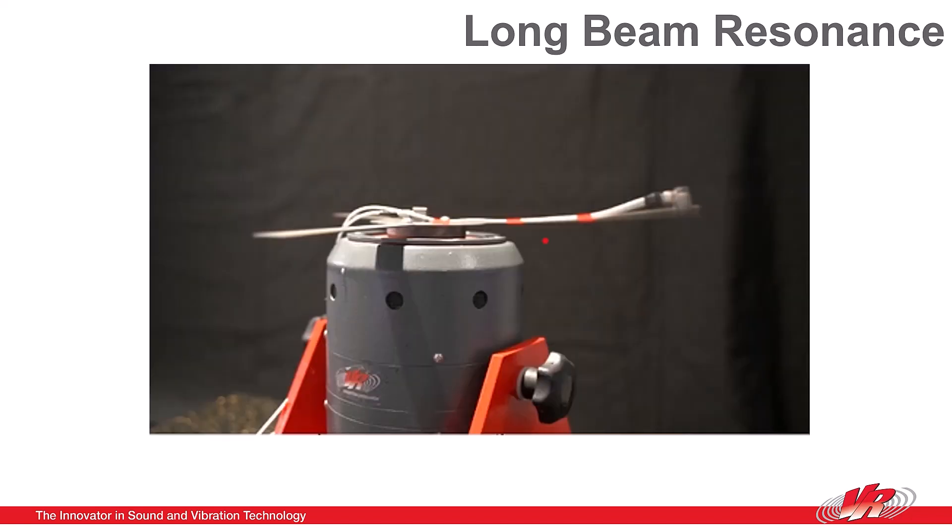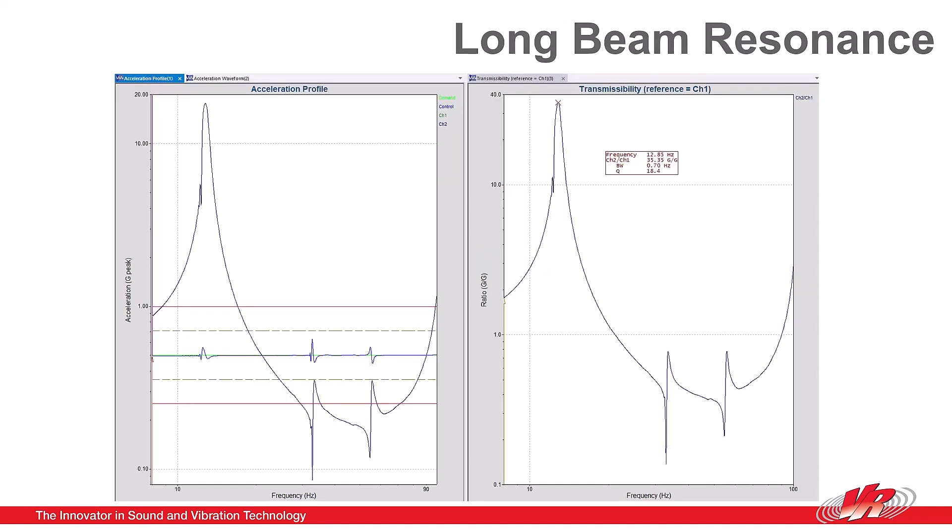In a previous test with our fixture of three different length beams, the accelerometer used was relatively large and had significant mass loading effects. On the first test, the accelerometer was mounted to the end of the longest beam. You can see on the VibrationVIEW software that the accelerometer showed a large resonance at about 12.5 Hz.